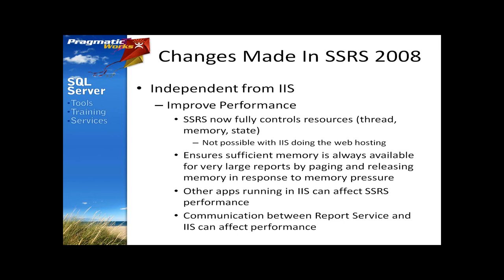There's also been Report Engine modification and report processing is now on demand. When you're rendering your report, it's only grabbing the first page of data and bringing it back. So if you have five pages but you're only viewing the first, it only brings data for that first page and not the other four. The same thing happens with expressions — it only processes those expressions for the page you're viewing. And lastly, there's a new Microsoft Word renderer and a new Word export option.